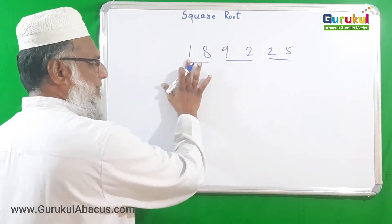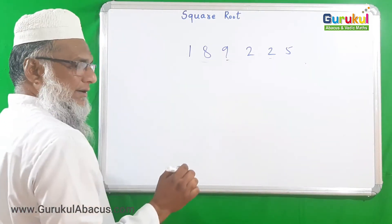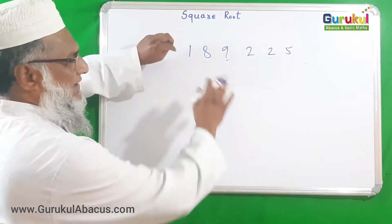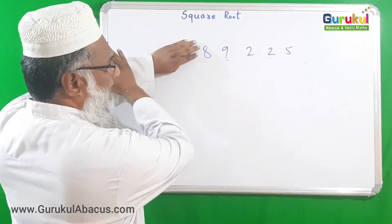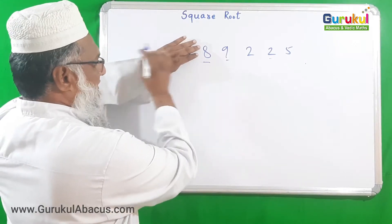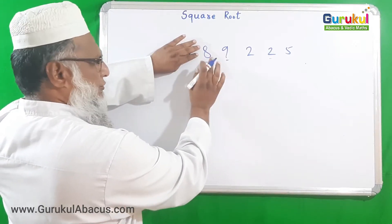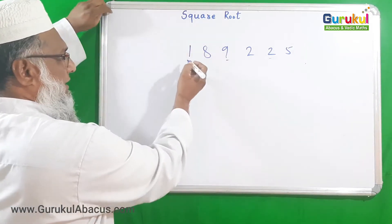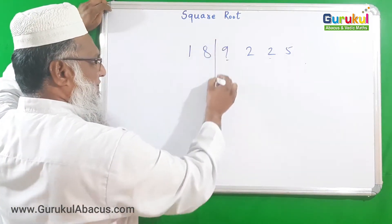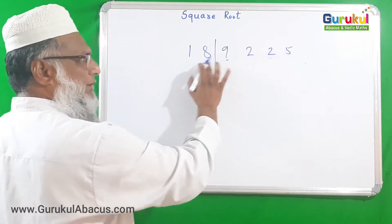Now, the first pair — sometimes a five-digit number is there, then your last pair from the left side would have only one digit, so don't worry about that. Here in our example the first pair has two digits, and between the remaining pairs I am putting cross lines to separate them.